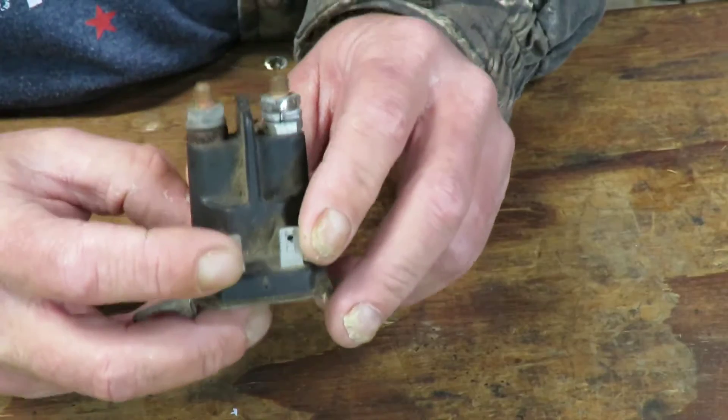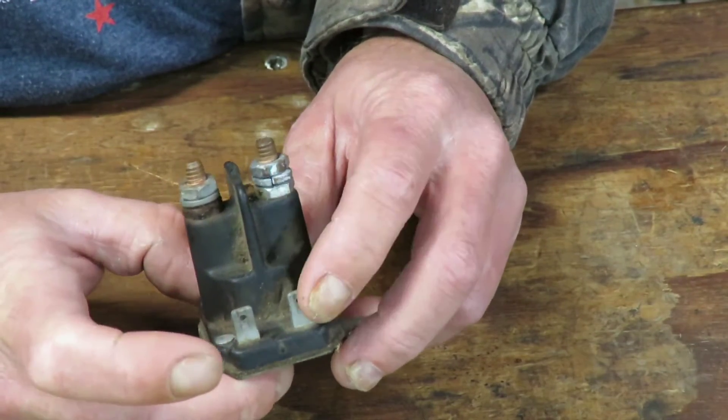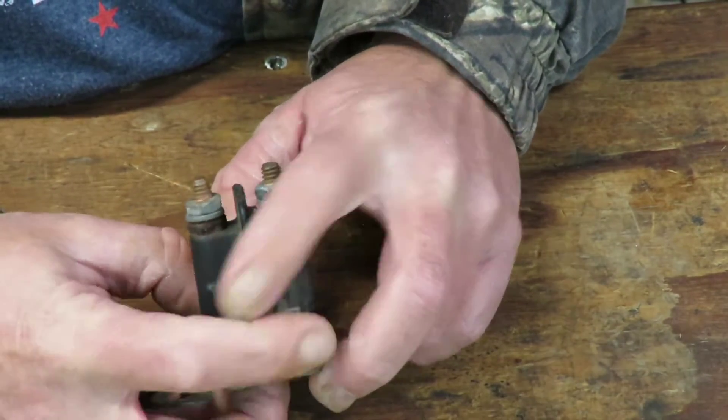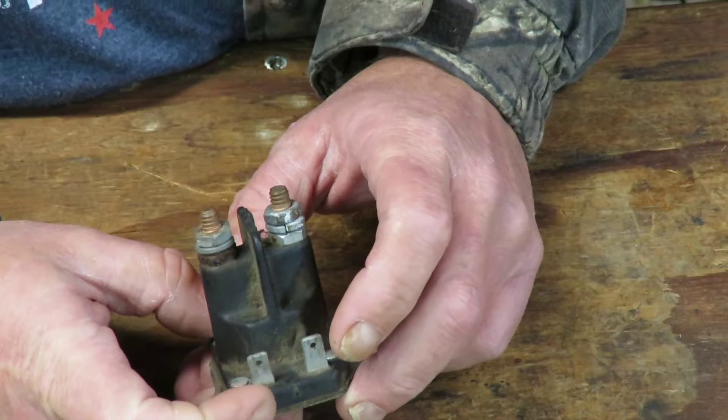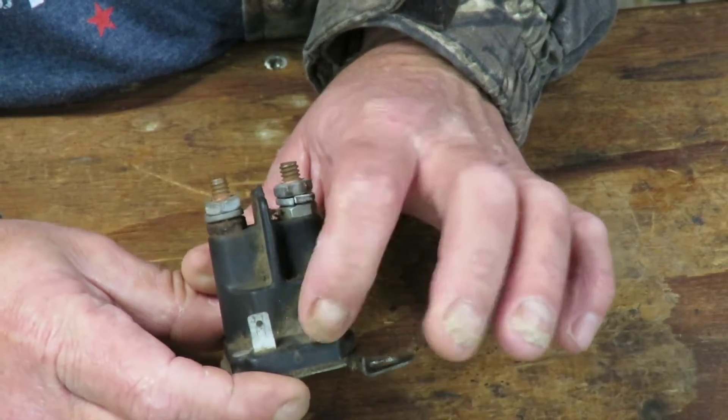This one has two terminals right here, one's positive one's ground. It doesn't matter which way you do it even on your mower. You can put one here, one here, you can swap them it doesn't matter. But if yours only has one terminal here and this one's not there, that's okay you can still test it.